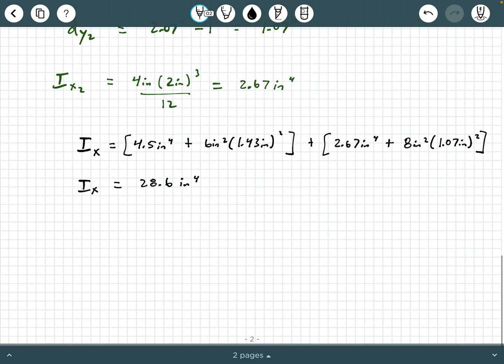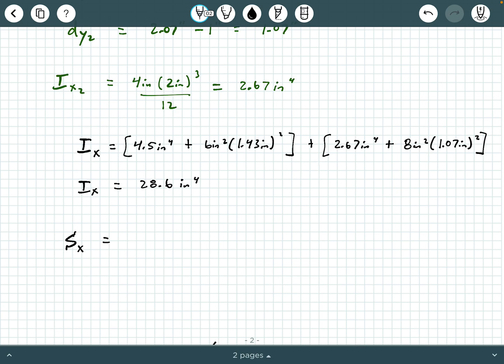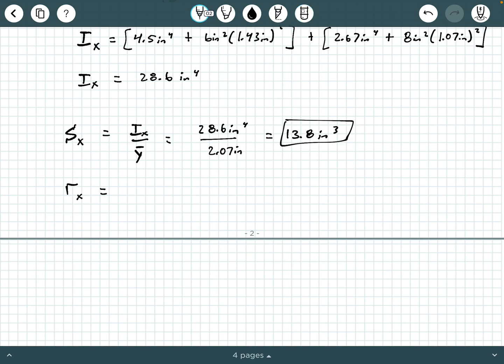So now we're ready to compute our final values. S sub X is I sub X over Y bar. So we get 28.6 inches to the fourth over 2.07 inches. And we get 13.8 inches cubed. That is cubed. That is one of our final answers. And then radius of gyration about the centroidal X axis is going to be a square root of I sub X over the cross section area. So we'll get square root of 28.6 inches to the fourth over 14 square inches. And we finally get an RX value of 1.43 inches. And that is our other answer. Again, punch these through and make sure you get the same answers as I'm getting. But that concludes this example.